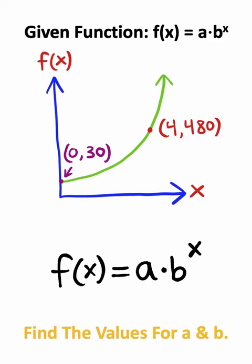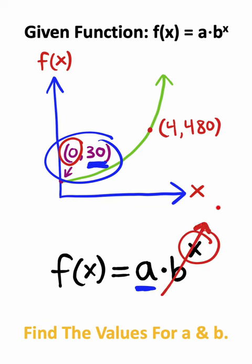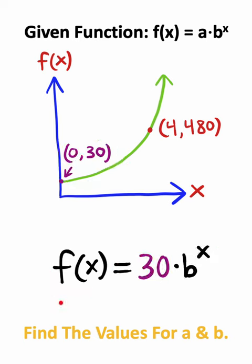So the function is in this form, and the value for a is going to be equal to the vertical intercept, which is 30. The reason for this is because if you take 0 and plug it in for x, this entire term will go to 1, meaning that you'll have a is equal to the y-intercept, which is 30.